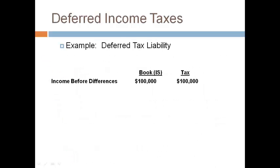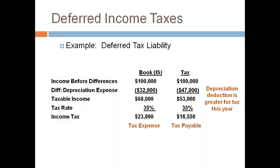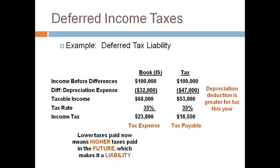Let's look at an example of a deferred tax liability. Income before differences will always be the same for book and tax. The book-tax difference is depreciation expense. In the current year, depreciation expense for tax is greater than depreciation expense for books. This creates a lower taxable income for tax, and tax payable is lower than tax expense in the current year. What happens in the future will always be the opposite of what occurs in the current year — a lower taxable income in the current year results in a higher tax payable in future years. Paying more in the future is a liability.